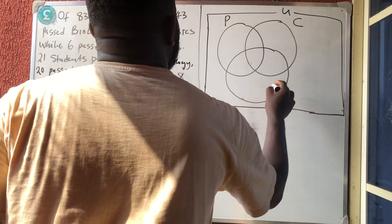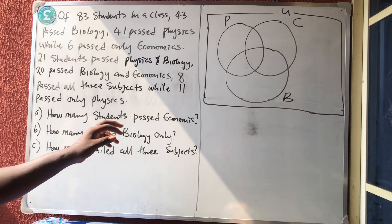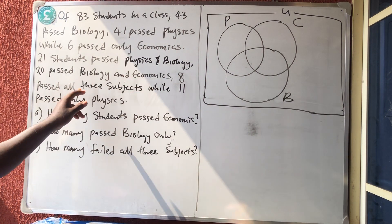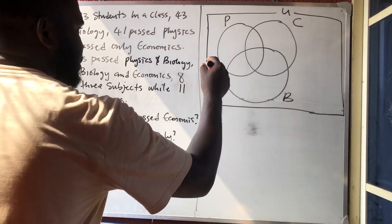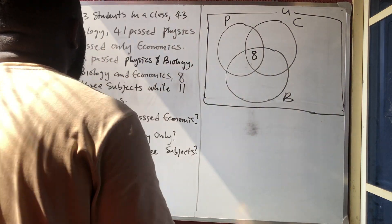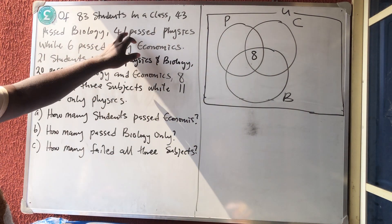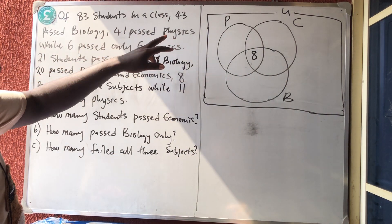Now, you must start from the people who did all three subjects. Eight passed all three, so the center intersection should be 8. Now let's go to the other values — 41 passed Physics.